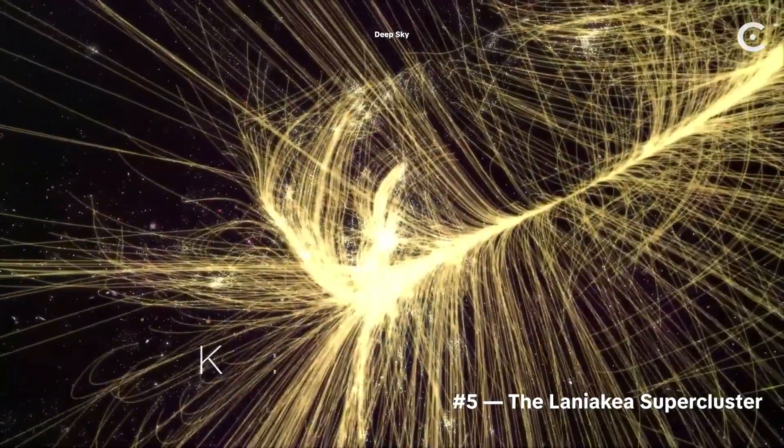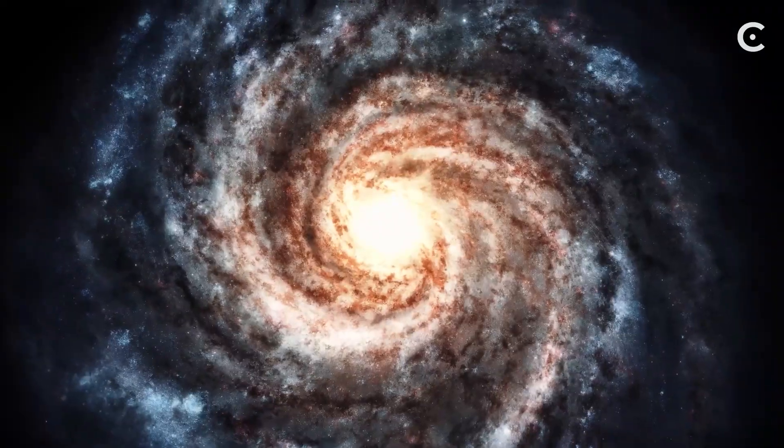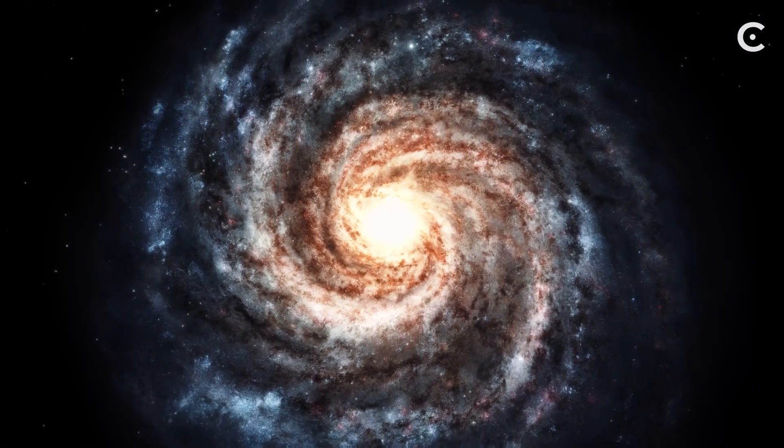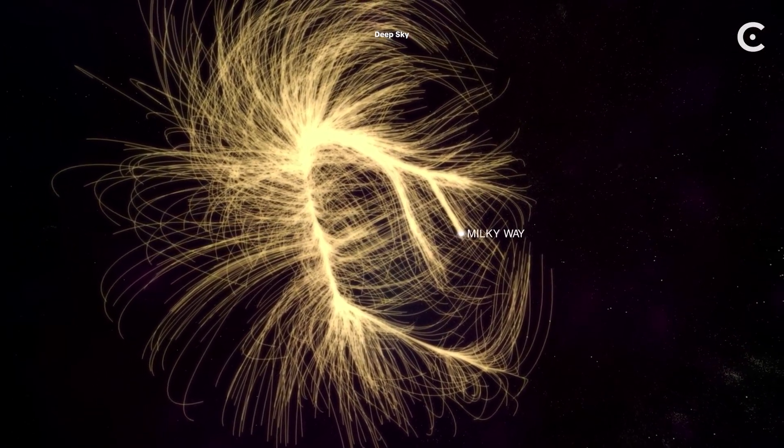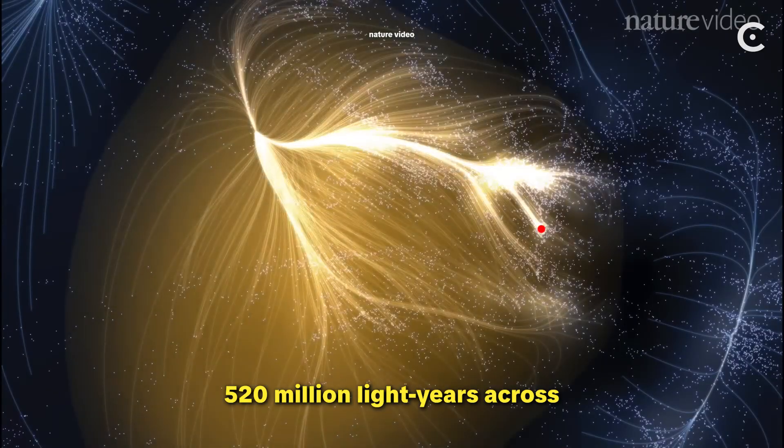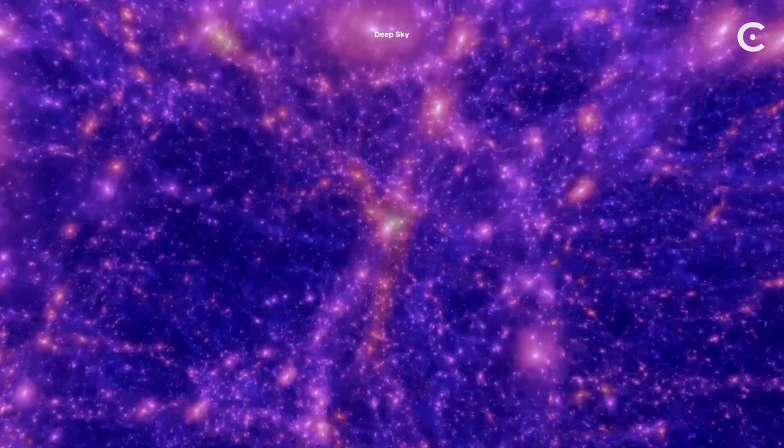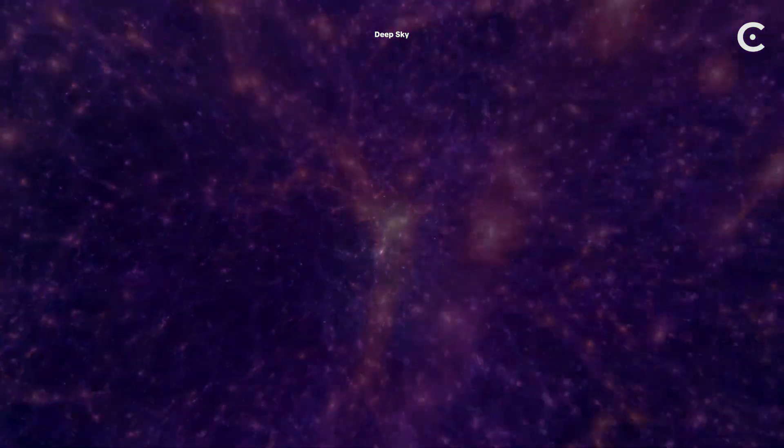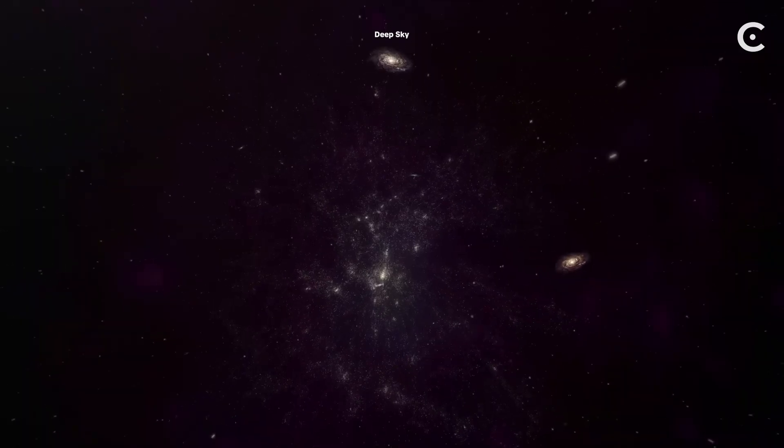This is the Laniakea Supercluster. And yes, you live here. The Milky Way, our entire galaxy with its 200 billion stars, is just one tiny speck inside this thing. Laniakea stretches about 520 million light years across. To put that in perspective, if you could somehow travel at the speed of light, 186,000 miles per second, it would still take you over half a billion years to cross it.